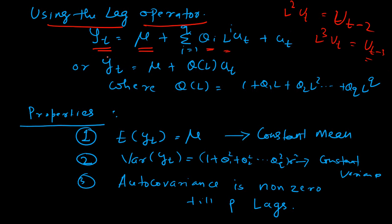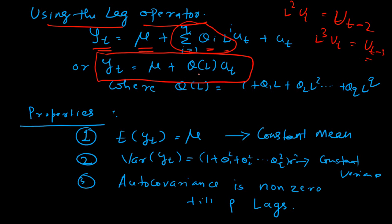We also represent YT as mu plus theta(L) times UT, where the entire summation term is represented as a function theta(L). Theta(L) is a function of the lag operator, where theta(L) is represented as 1 plus theta_1 L plus theta_2 L squared up to theta_Q L to the power Q. So all these representations are equivalent — it is just a different way of representing the same thing, starting from the linear combination of white noise processes, then introducing the summation, then the lag operator L, and finally the function theta(L).